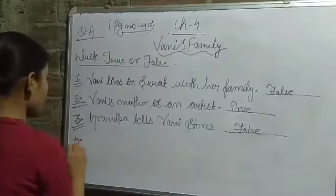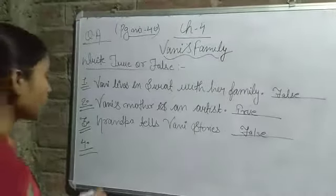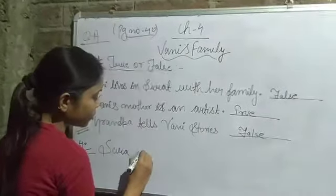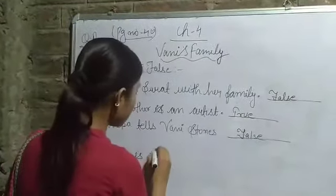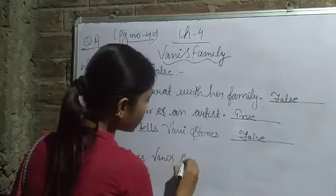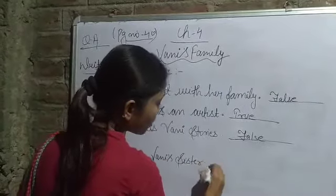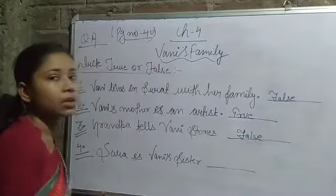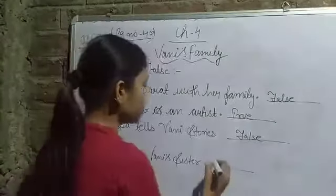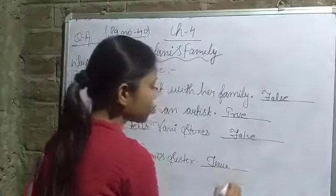Number 4: 'Sarah is Vaani's sister.' Yes, it's a true sentence. Sarah is Vaani's 3-year-old younger sister. So this is a true sentence and we have to write True.